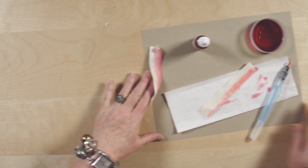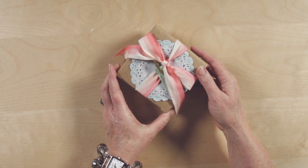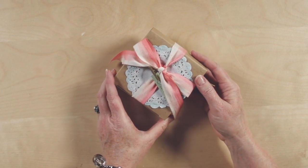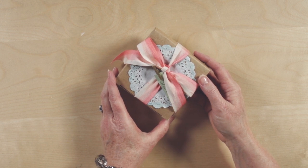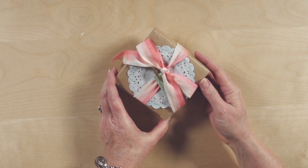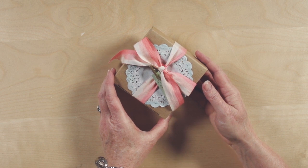So two really easy techniques that you can do to get the faux dip dyeing effect. So the next time you're wanting to add a little bit of color to your projects, like this box right here, we dip dyed the doily and we did the coloring on the ribbon, you can give dip dyeing or faux dip dyeing technique a try. Until next time, happy stamping!